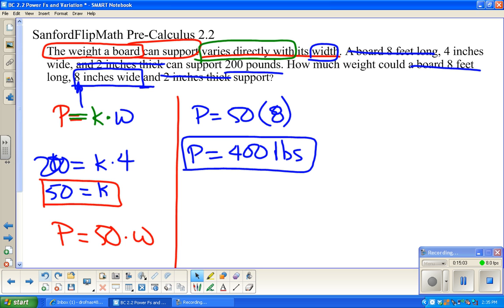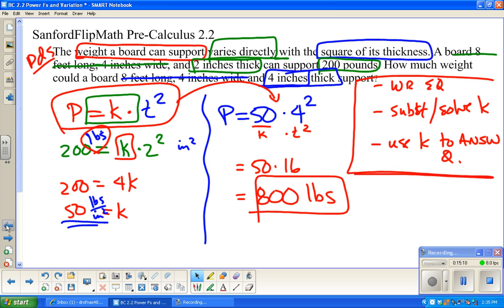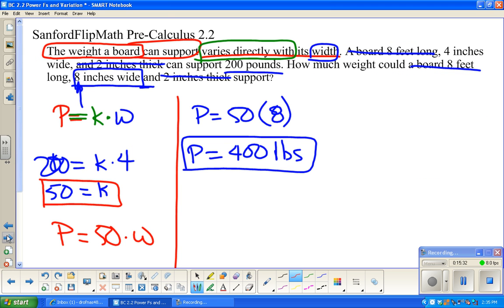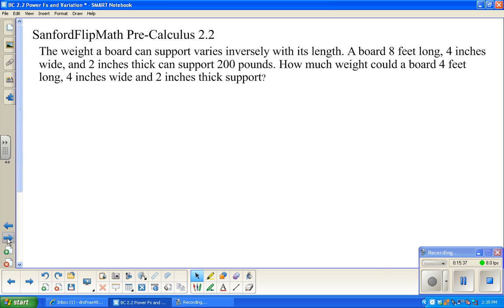Quick little side note here. I doubled the width. And it doubled the amount that it could support. Let me pop back here. Thickness varied as the square. The weight varied as the square of the thickness. When I doubled the thickness, it didn't just double the weight. It multiplied it times four. Two squared. This was just doubling and it just doubled. Let's do one more example of this and then we'll be done.